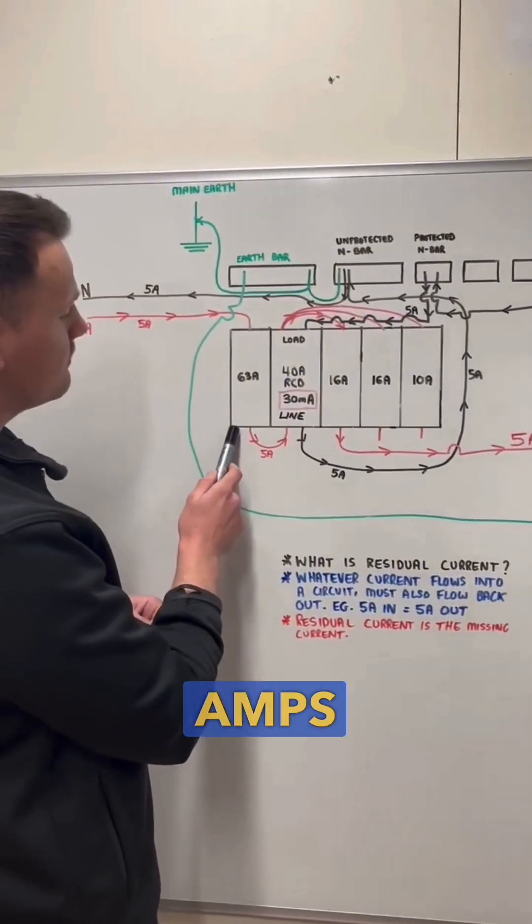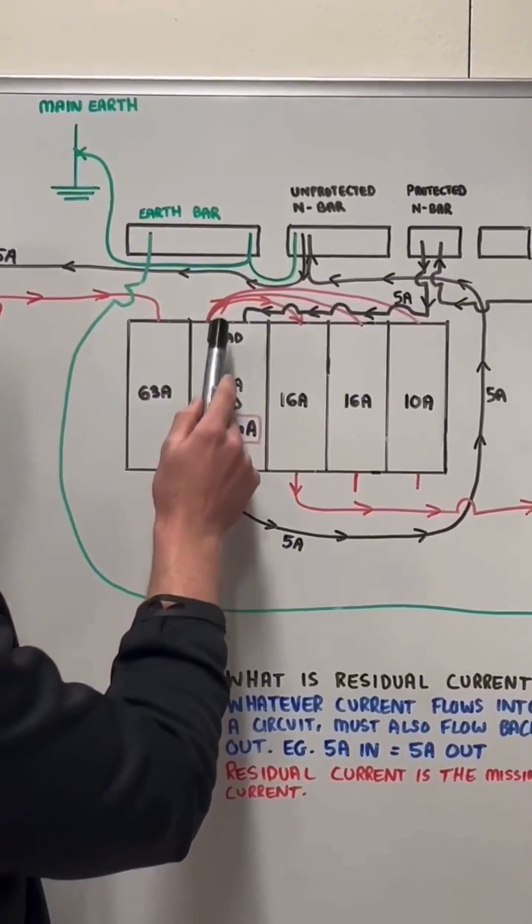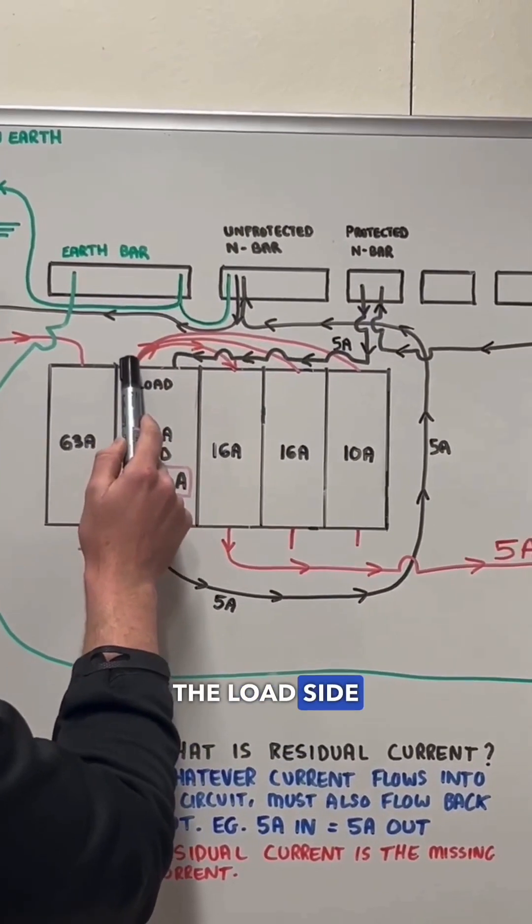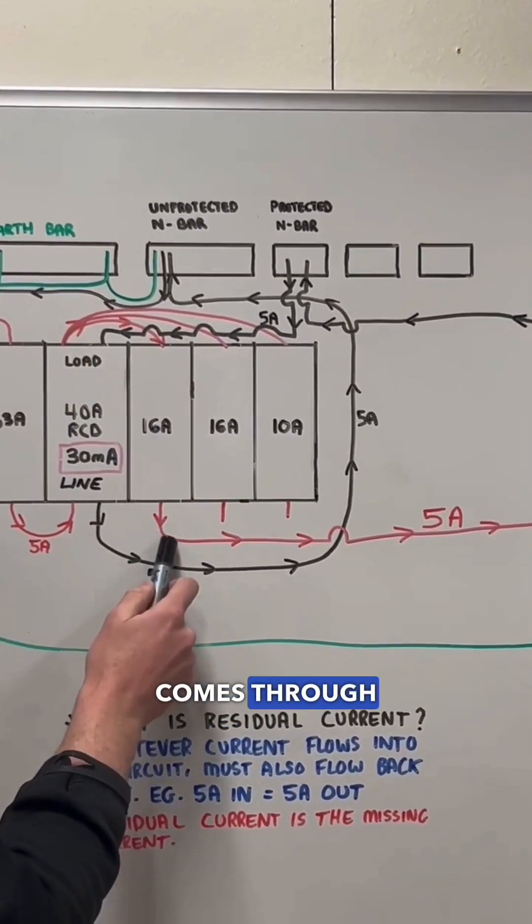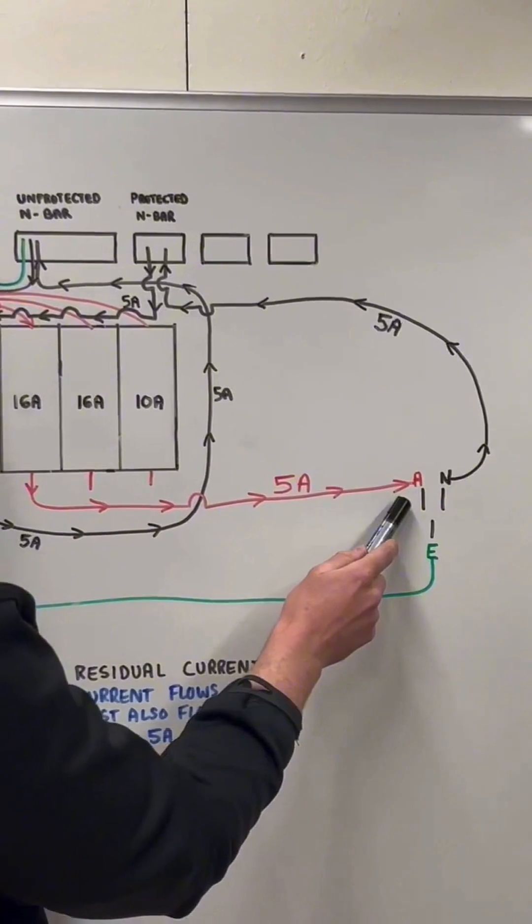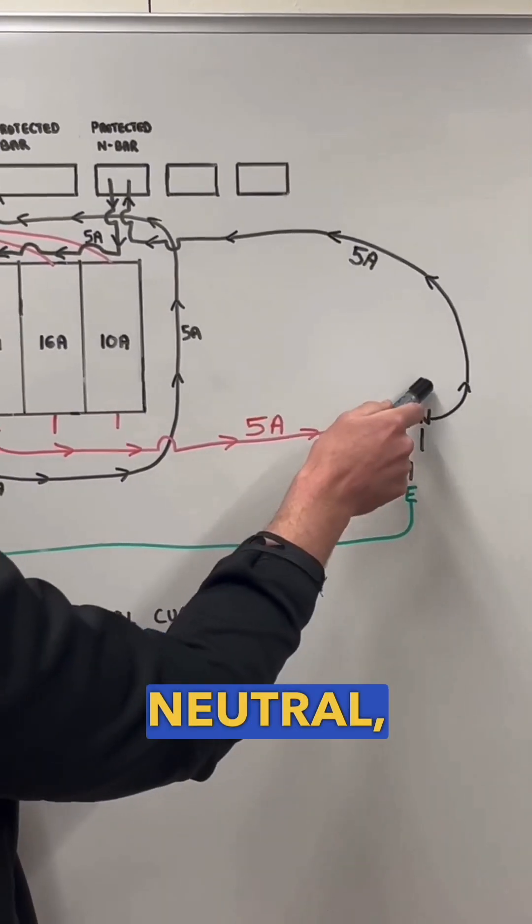So we're pulling 5 amps through into our 40 amp RCD on the line side, and then that's coming out of the load side of the RCD and into our circuit breaker. Then that comes through our active conductor to the power point, and then we've got our hammer drill running. So that's running through the hammer drill, back through the neutral.